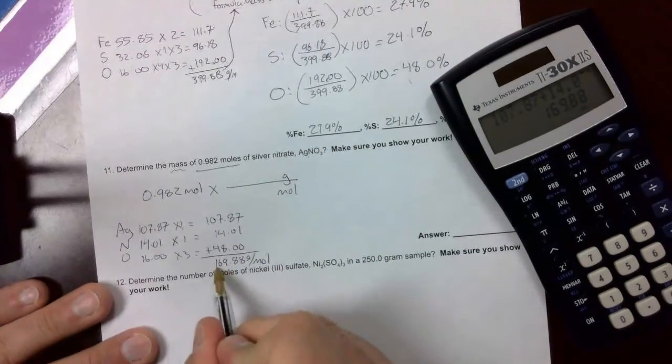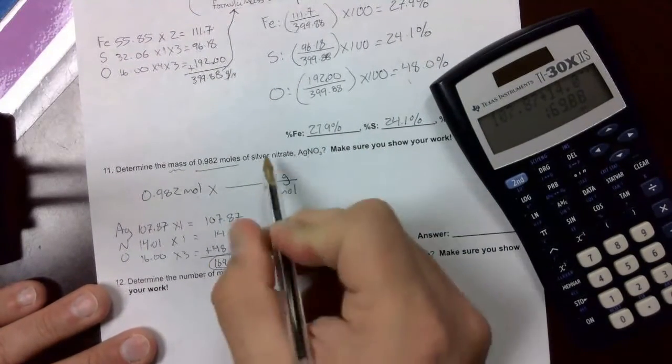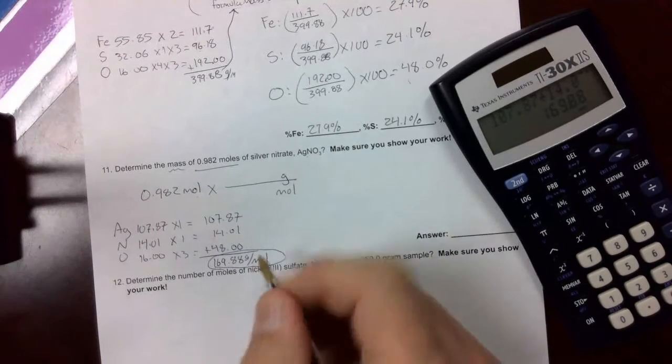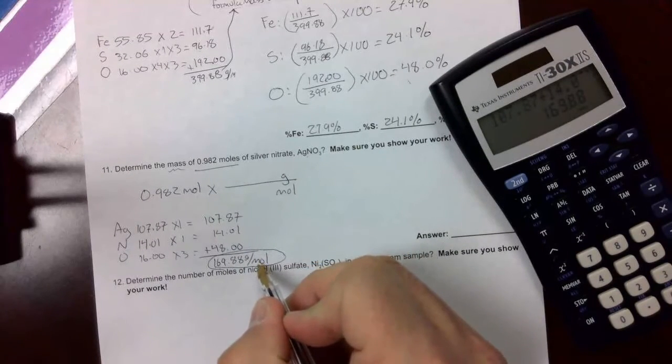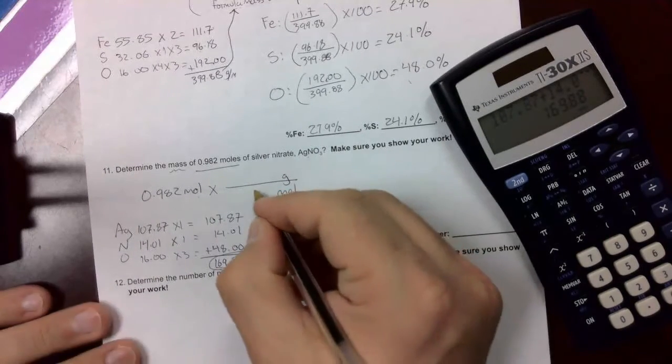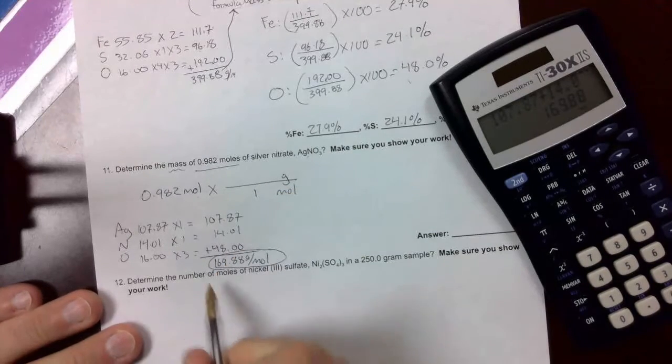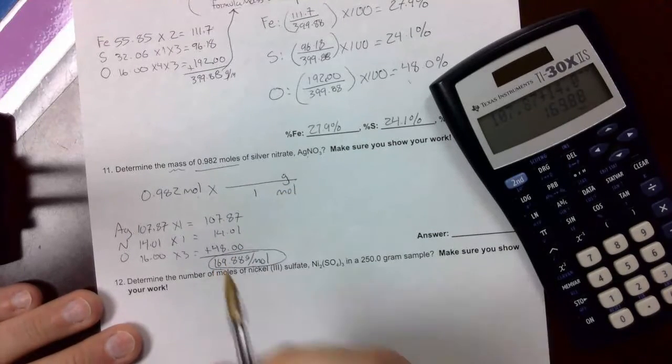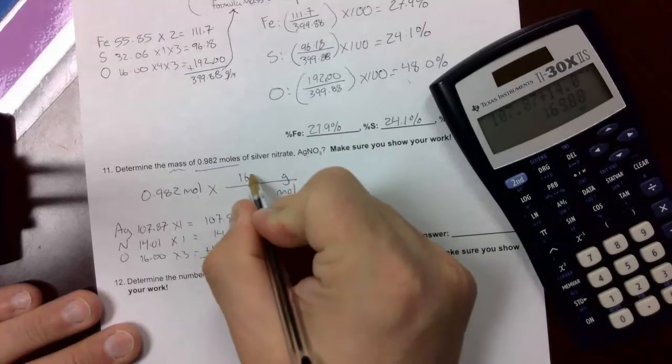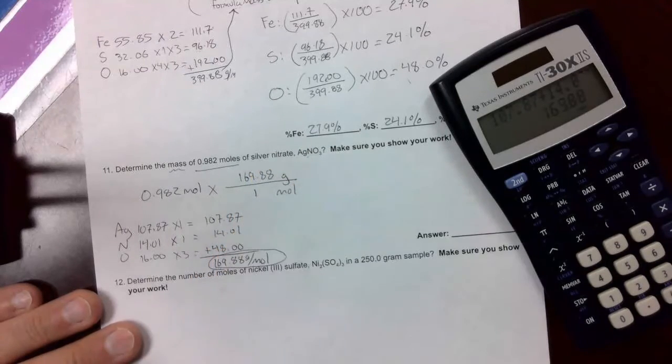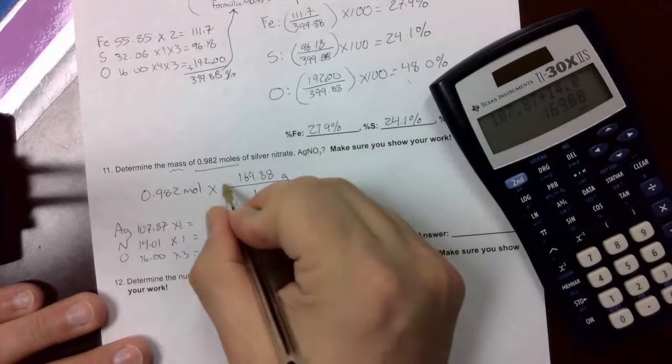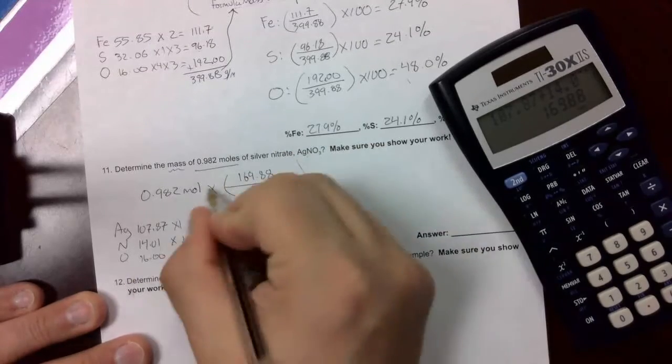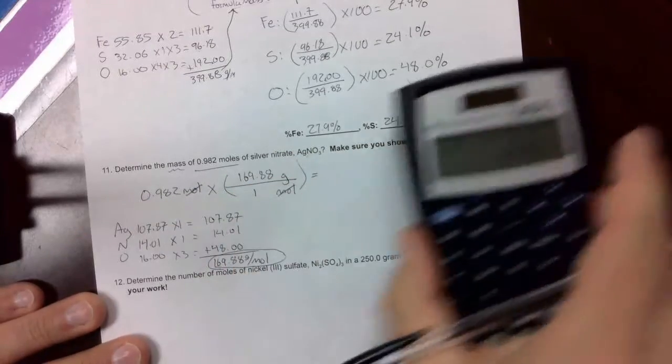This fraction that we just found tells us the numbers that go in here. With mole under the fraction, there's a 1 because it's not written. So that's what we write here. This number, 169.88, goes with grams. Now, we can put this in parentheses, cancel out moles, and use our calculator to get the final answer.